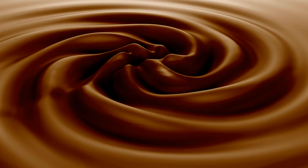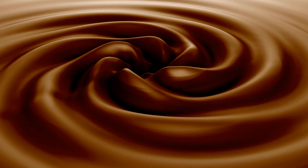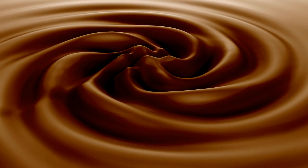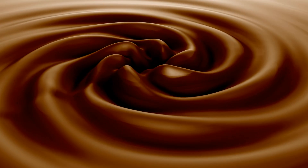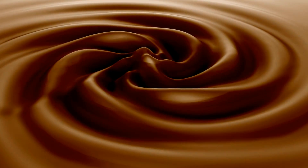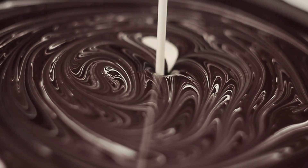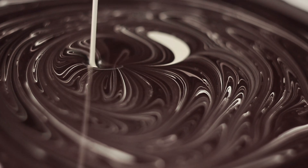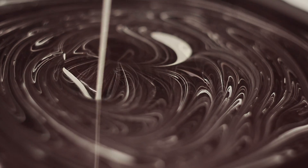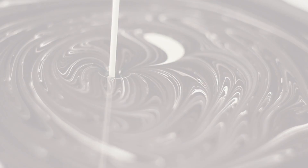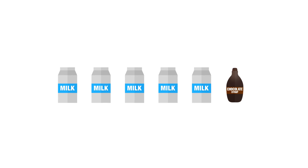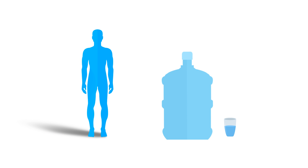Homeostasis. Ever see your mom make you hot chocolate? Have you noticed what she does when she accidentally drops a little extra chocolate syrup? She adds a little extra milk. Do you know why she does that? Because too much or too little of an ingredient can ruin your hot chocolate. Just like that, too much or too little of something can disrupt the processes in our body.